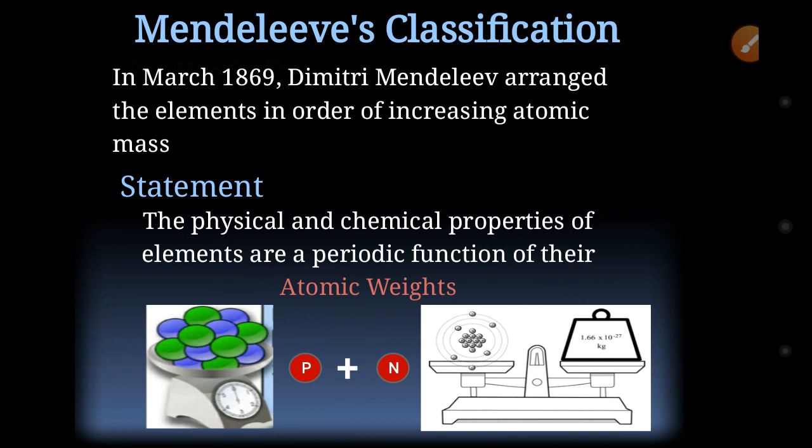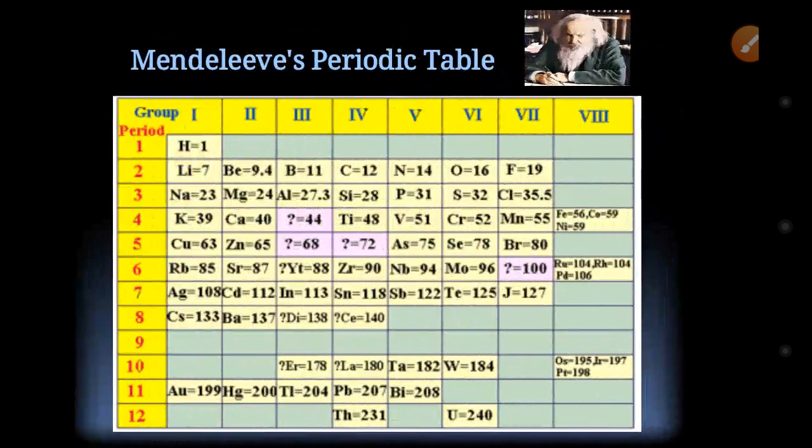The atomic mass is basically the sum of the number of protons and neutrons in an atom. The properties of any element depend on its atomic mass — this was the statement of Mendeleev's periodic law. According to his statement, he arranged a table. He was the first scientist to arrange elements in the form of a table. We are now going to study the major important points of Mendeleev's periodic table.